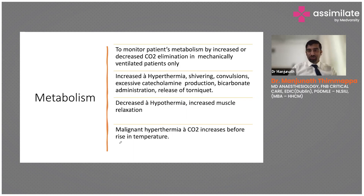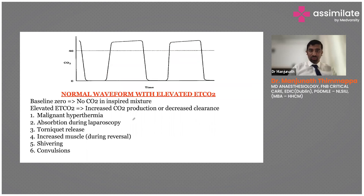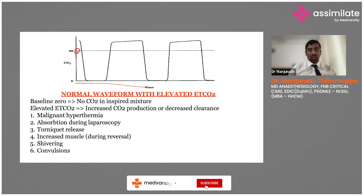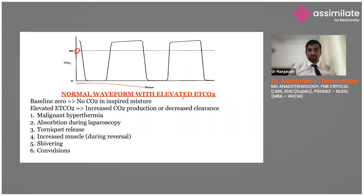This also tells us about metabolism. If EtCO2 is high, it can be because of hyperthermia, shivering — shivering being anaerobic metabolism — convulsions, excessive catecholamine production, and bicarbonate administration. This is the normal waveform with elevated CO2. The baseline is shown and 40 is the marker; if it has gone above 40, it means EtCO2 is elevated.